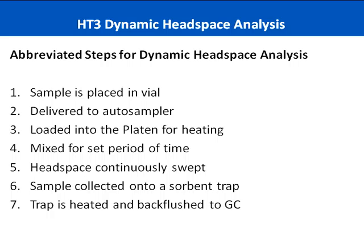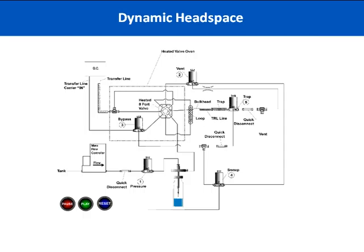The dynamic mode utilizes the standard 12-inch trap as mentioned. The HT3 ships with a Vocarp 3000, also known as a K-trap, in place. However, the new Number 9 Teledyne Tecmar proprietary trap is now also available for the HT3. We've included another animated flow diagram, this time while in the dynamic or trapping mode. Take a moment to see how the system is pressurized and how the sample is delivered to the analytical trap and then further desorbed over to the GC system.